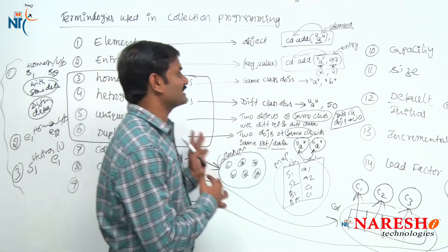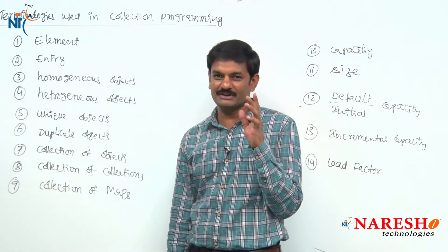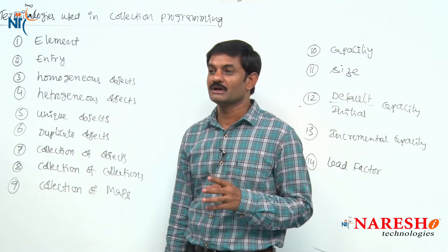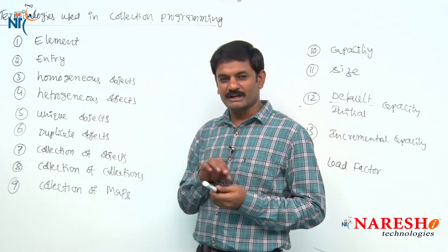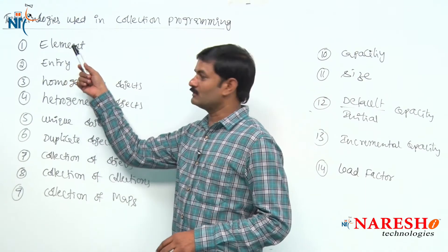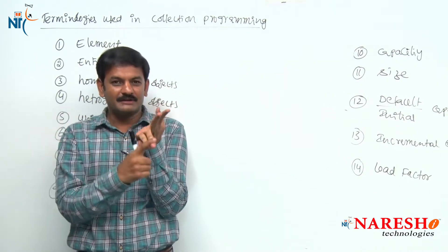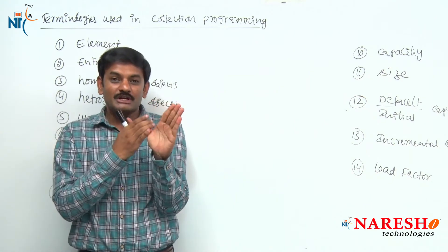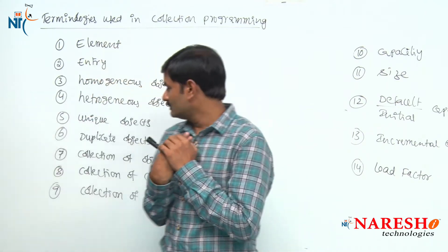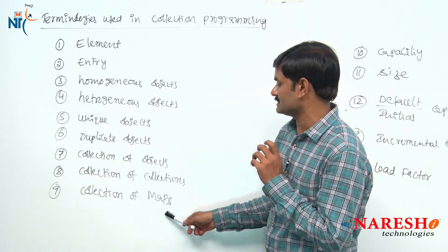The first part of this topic is completed. I want you to repeat all these words and try to answer. By the end of the video, you must learn while listening and then move on — not listen first and memorize later. The revision will be given while watching the video itself. Now repeat the terminology: element, entry, homogeneous objects, heterogeneous objects, unique objects, duplicate, collection of objects, collection of collections, and collection of maps.